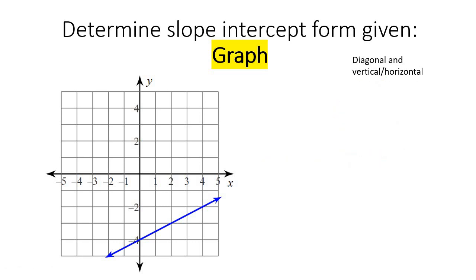If you can remember from the previous lesson where we learned how to find the slope-intercept form when given two points, then this lesson is going to be really easy. What we do is we look at the graph, look at the line, and find any two points that are easy to read.